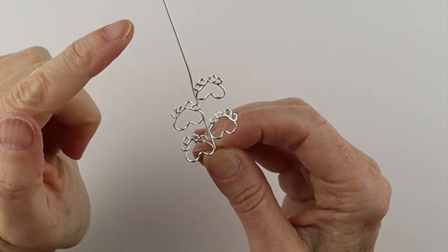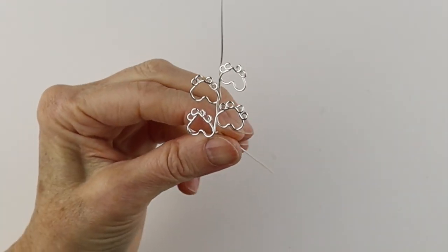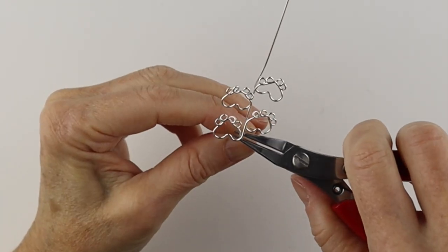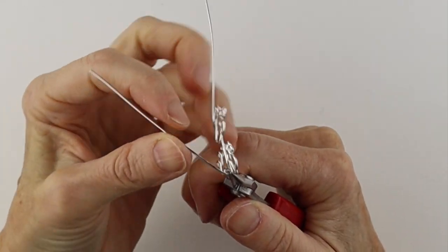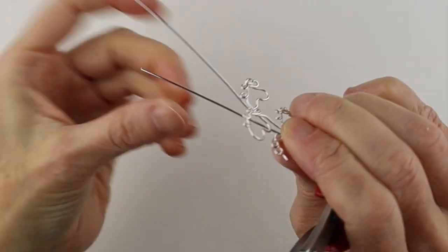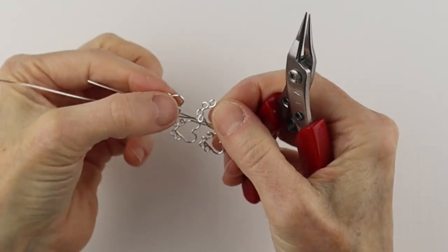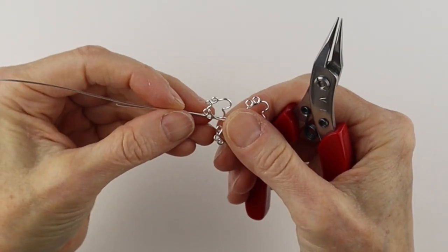So once we've done four paws in the same way, we're just going to take this back wire here like that and bend it straight up because we want it, we want to stabilize these so they don't come apart.